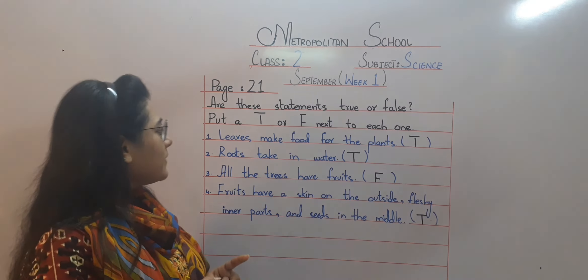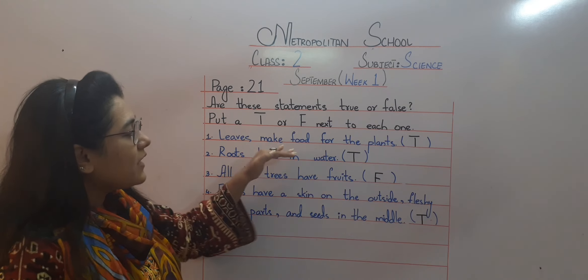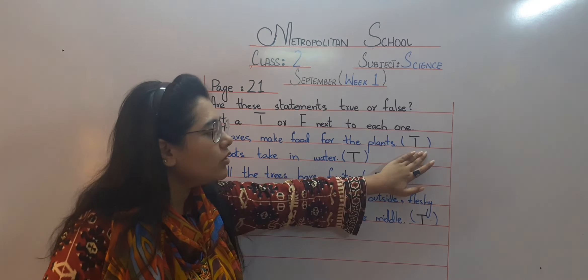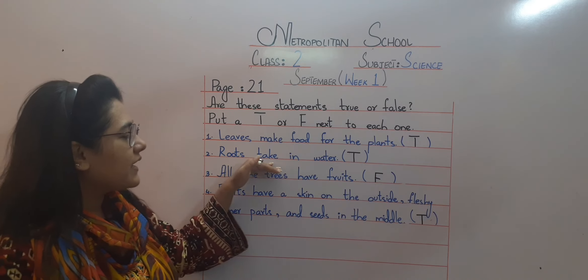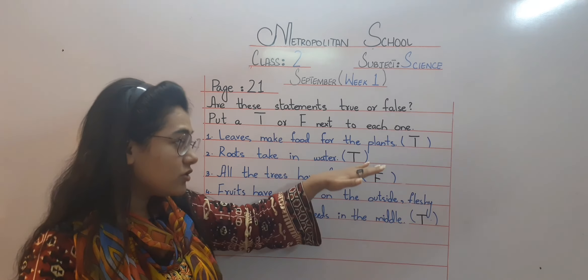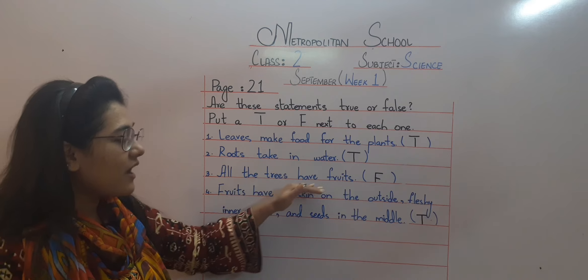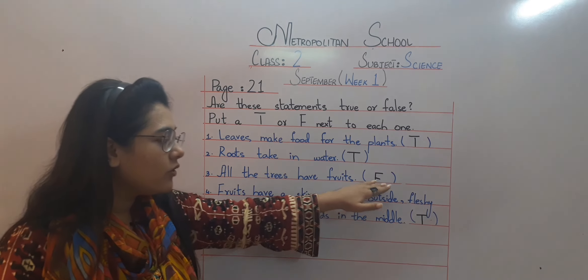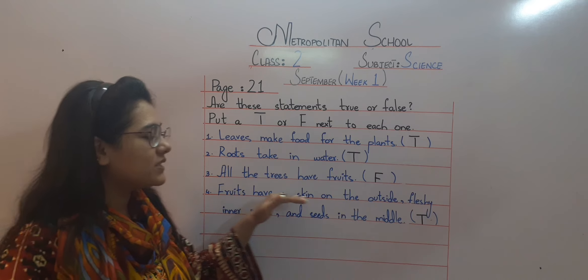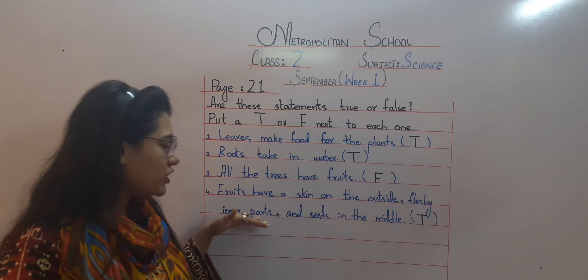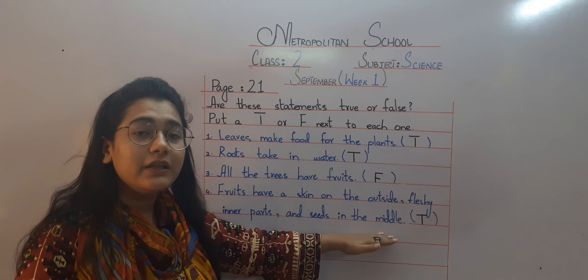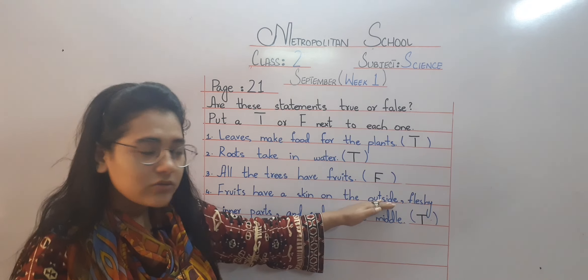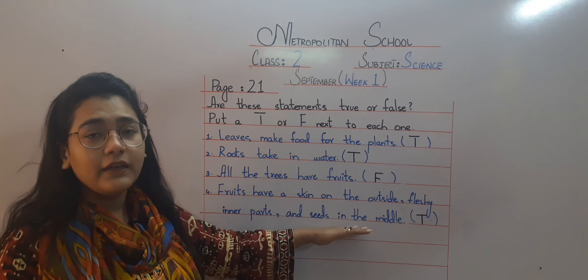Let's repeat one time. Leaves make food for the plants — True. Roots take in water — True. All trees have fruits — No, not all trees have fruits, so False. Fruits have a skin on the outside, fleshy inner part, and seed in the middle — Yes, True.